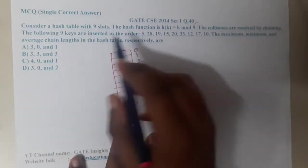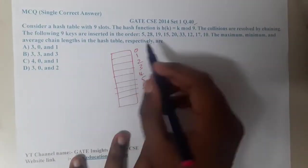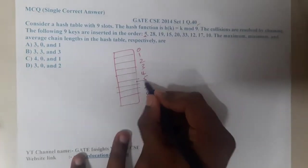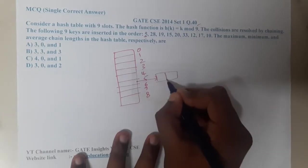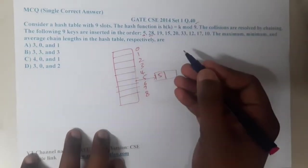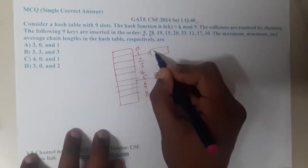We are using chaining, so the first value is 5. So 5 mod 9, the value will be linked here, so you will be having 5 here. Similarly, 28 mod 9 - you will get 1 as the result, so it will be 28 here.